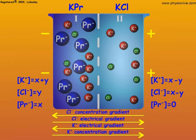At equilibrium, the competing electrical and concentration gradients for each ion are in balance and there is no net flow of ions through the membrane.